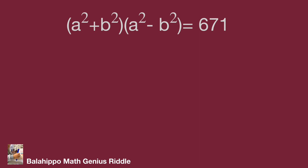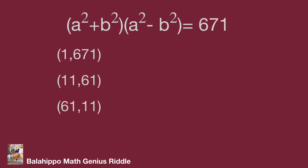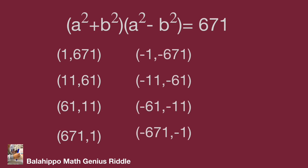We now have two quantities multiplied together equaling 671. Find the factor pairs of 671. The positive number groups for these two quantities could be 1 × 671, 11 × 61, 61 × 11, and 671 × 1. We also identify the corresponding negative number groups such as -1 × -671 and -11 × -61.